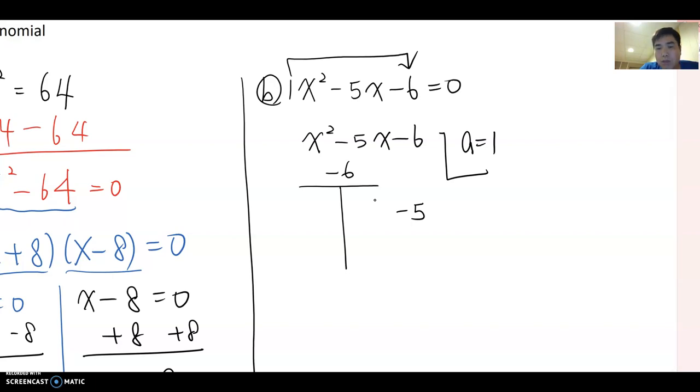It means one number sign must be minus, the other one must be plus here. Because negative times positive become negative. And now, the sum becomes negative 5, which means the absolute larger value must have a negative sign compared to the other value. Now, 6, we can break them out. 6 times 1 or 3 times 2. Among these two pairs, which one gives the sum equal negative 5? Yes, negative 6 and 1.